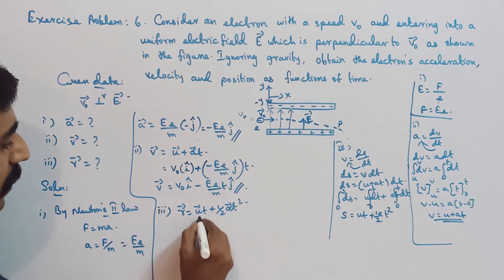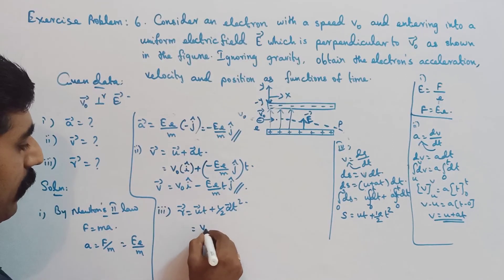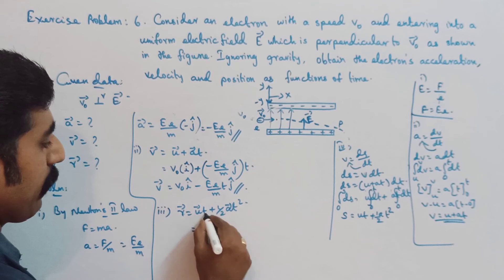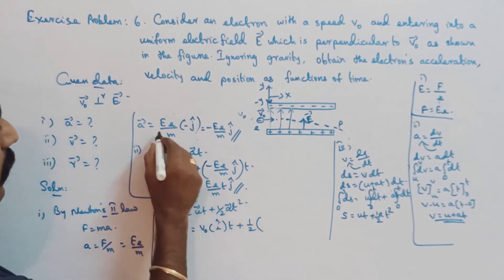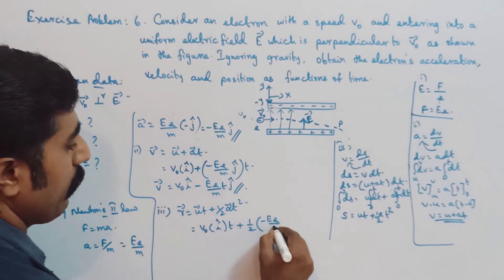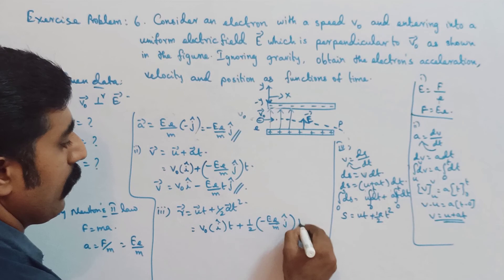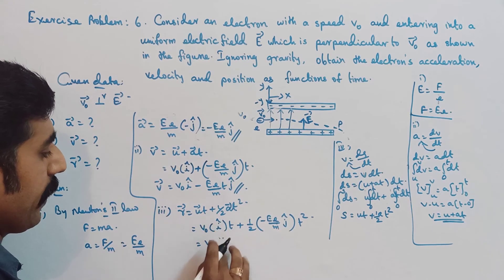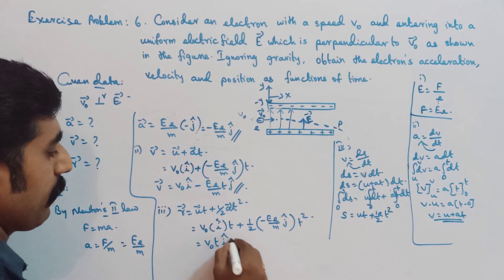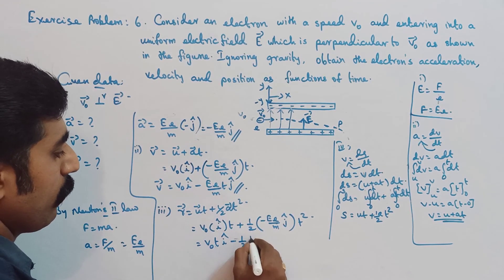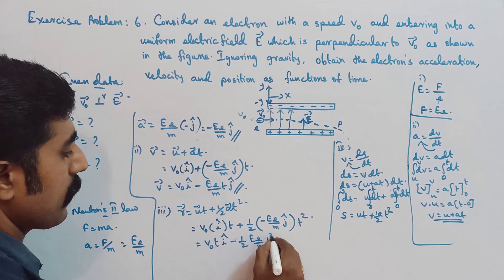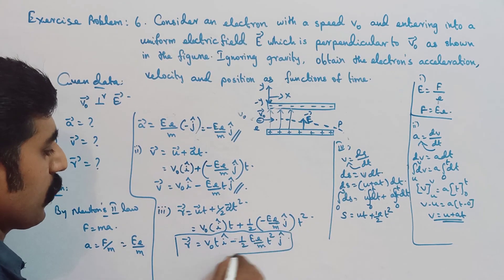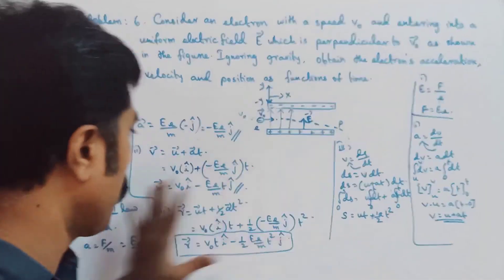From this, we can write the position vector R vector: u is V0 in the positive x-axis, so V0 î cap multiplied by t, plus ½ times acceleration vector which is minus eE/m ĵ cap, times t squared. So R vector equals V0·t î cap minus ½(eE/m)t² ĵ cap. This is the position of the electron.